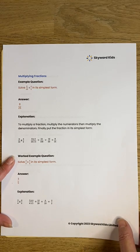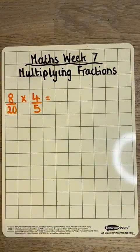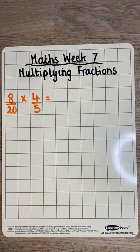Let's look at how we do that sum. So here's the same question, 8 twentieths times by 4 fifths. Now to multiply fractions, we times the numerators by each other, and then times the denominators by each other, which will give you a fraction as your answer.